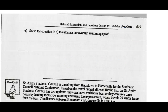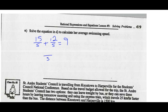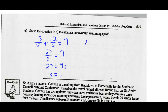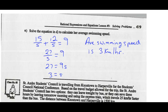Now I'm going to solve this equation to calculate her average swimming speed. So 15 over S plus 12 over S equals nine. They already have the same common denominator, so 15 plus 12 gives 27 over S equals nine. Multiply both sides by S: 27 equals 9S. Divide both sides by nine: S equals three. So her average swimming speed is three kilometers per hour, and her average cycling speed would be eight times that, so 24 kilometers per hour.